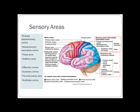Sensory areas are found posterior to the central sulcus and include the primary sensory cortex and association cortex. Wernicke's area is here for language comprehension. Just in front of it are the auditory association area and auditory cortex. Further back is the visual cortex, then the visual association area — which links what you see with past experiences, like recognizing apple pie and knowing you like it.